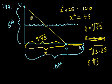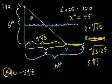So if I want to figure out this distance, I just subtract that from 10. So 10 minus 5 square roots of 3. And that is choice A. See you in the next video.